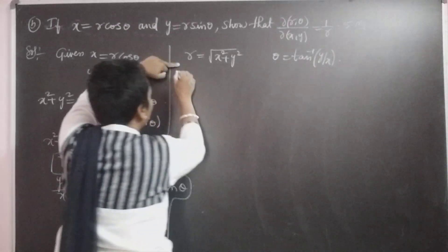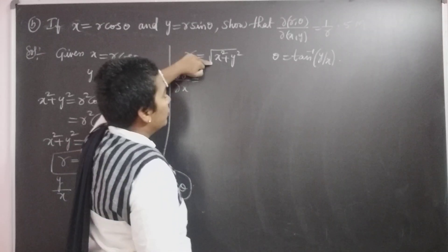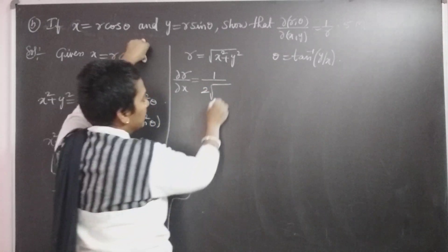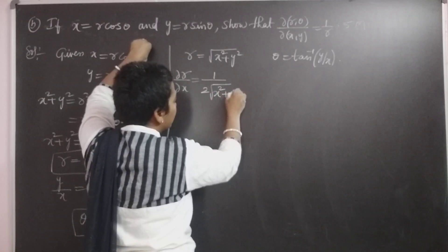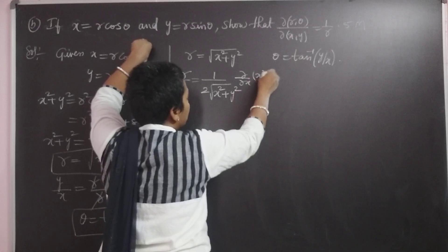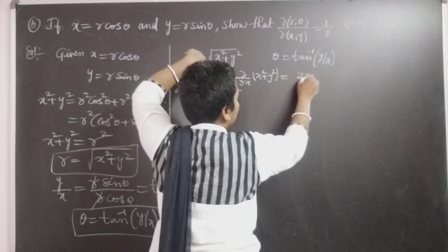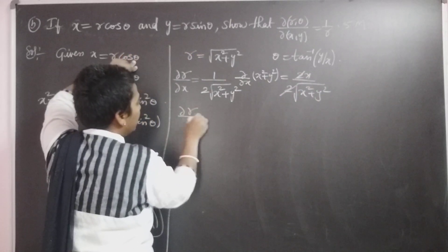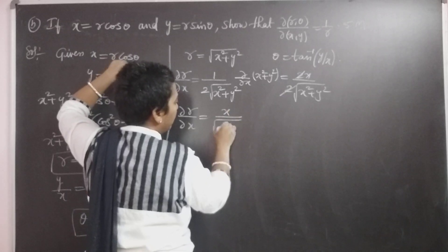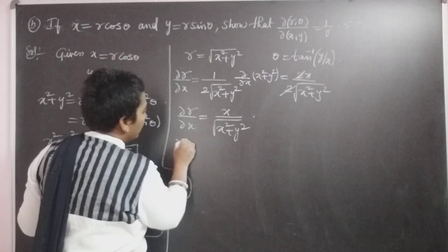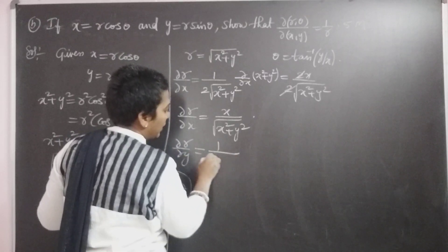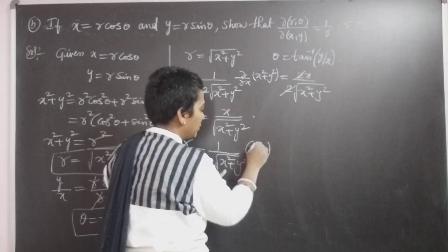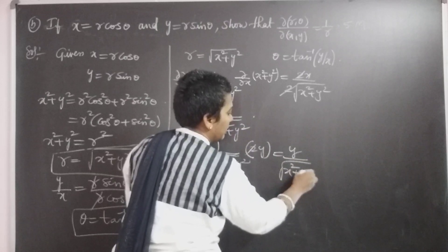Now we can find out ∂r/∂x. The derivative of √x is 1/(2√x), so that gives 1/(2√(x²+y²)). Again ∂/∂x of (x²+y²): the x² derivative is 2x, so we get 2x / (2√(x²+y²)), the 2s cancel. Therefore ∂r/∂x equal to x / √(x²+y²). Similarly, ∂r/∂y: the derivative gives 2y / (2√(x²+y²)), the 2s cancel, giving y / √(x²+y²).